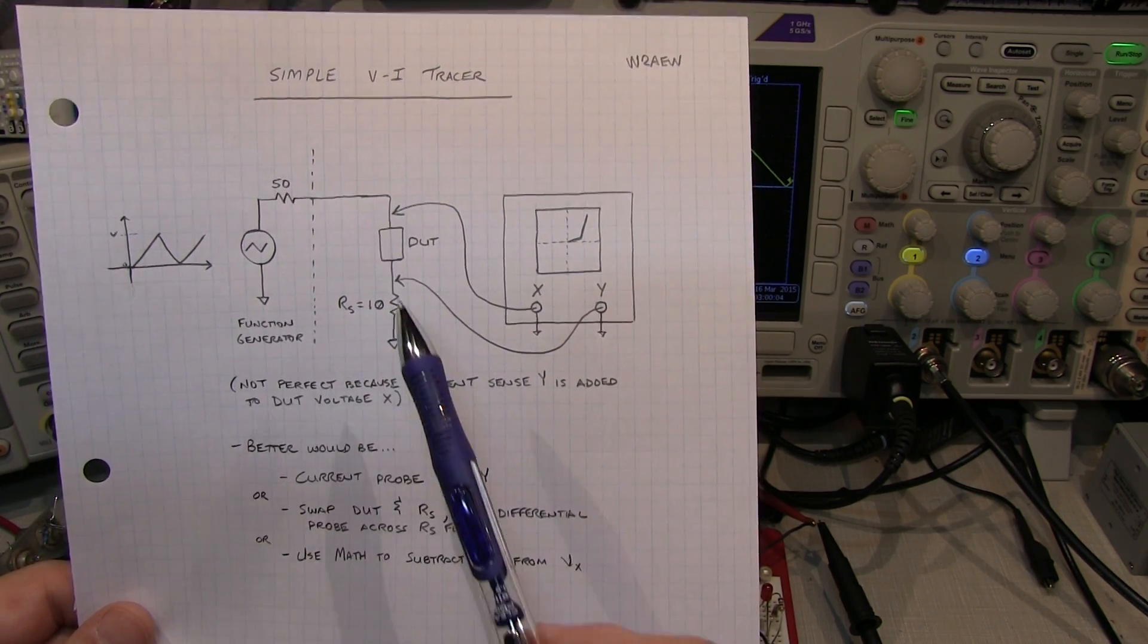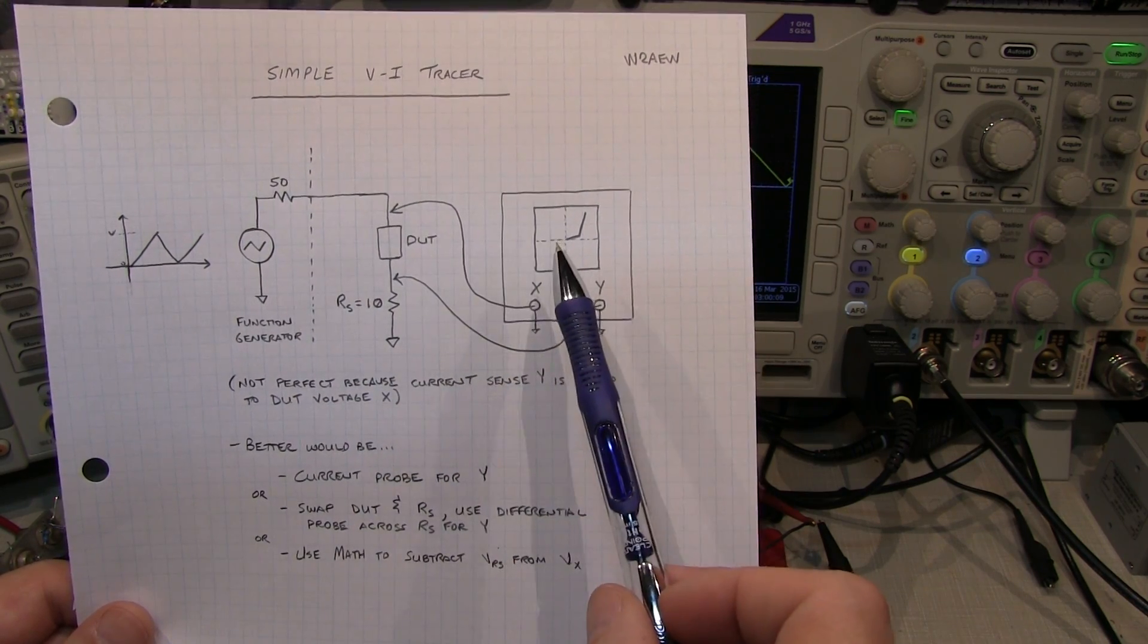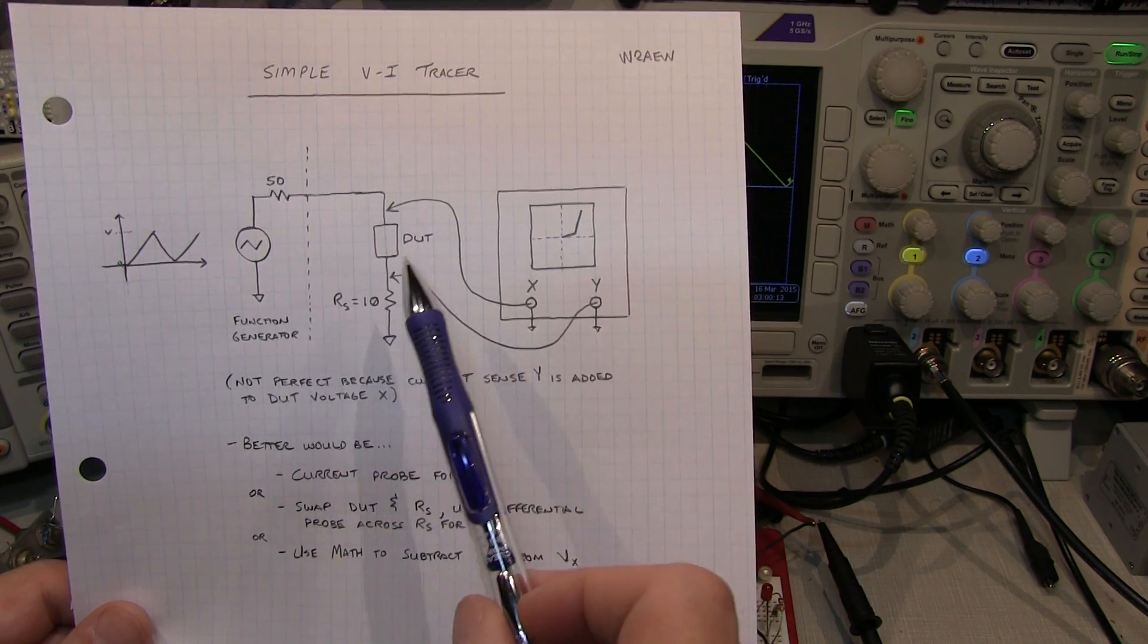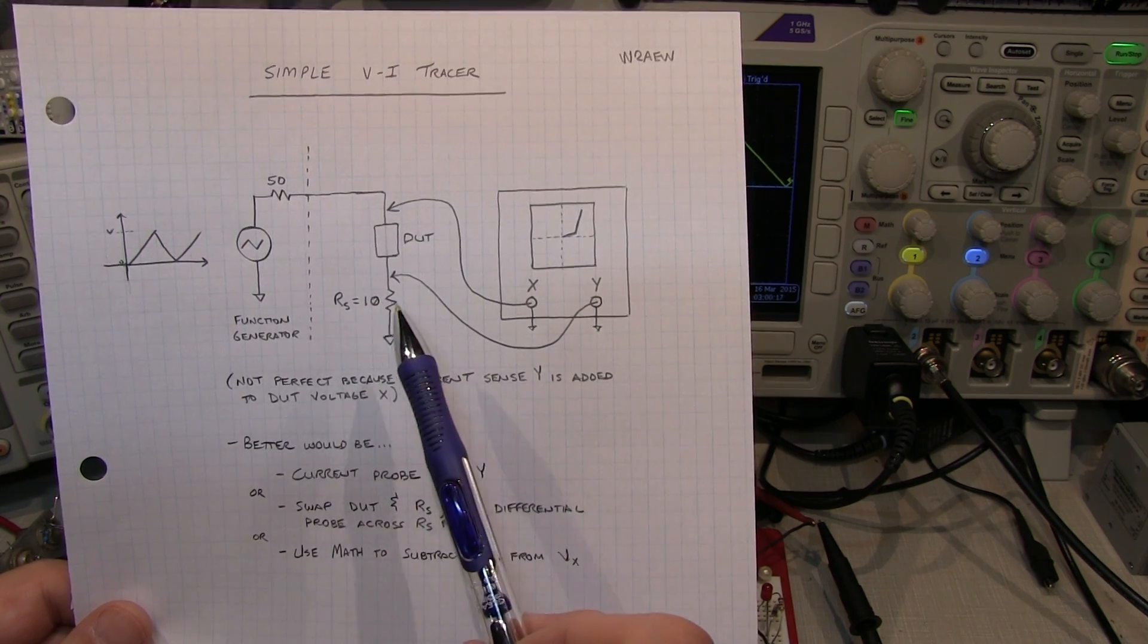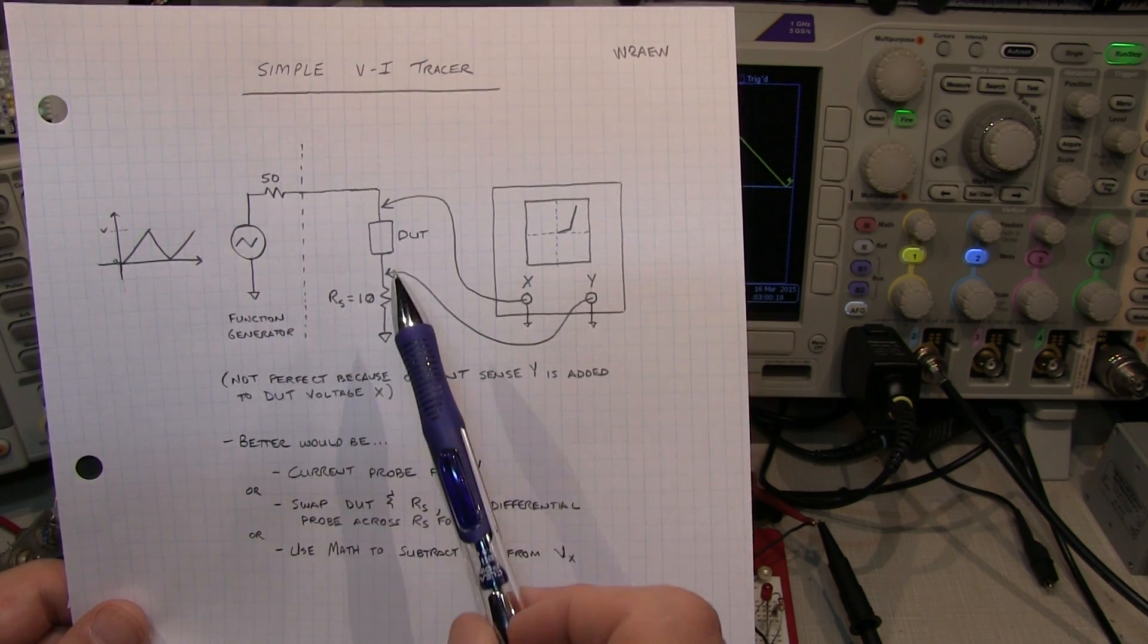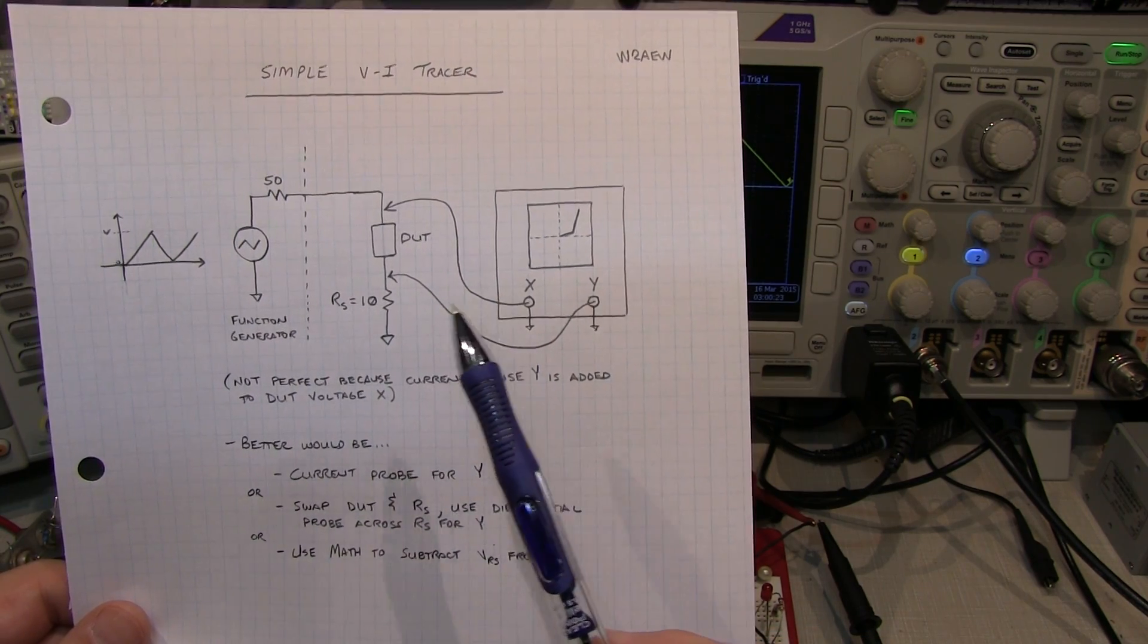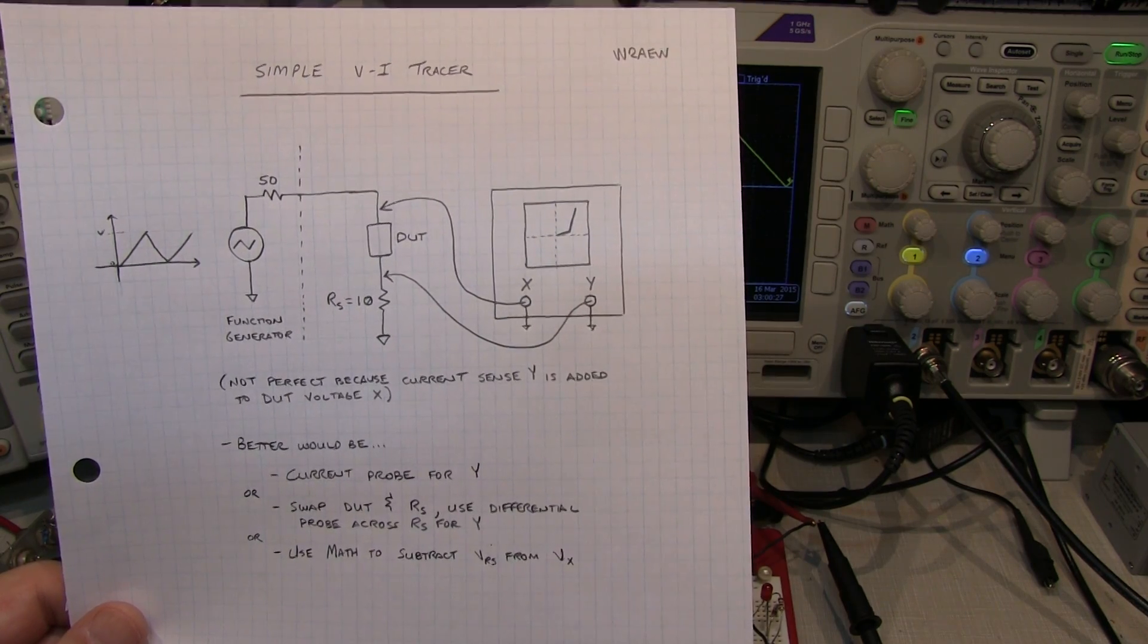Now this isn't perfect because the voltage that we measure at the top of the DUT that's going to drive the X position on the curve tracer is the sum of the DUT voltage and the current sense voltage. If this current sense voltage is very small with respect to the DUT, then you can somewhat ignore it, but the basic shape will give you an idea of what's going on.